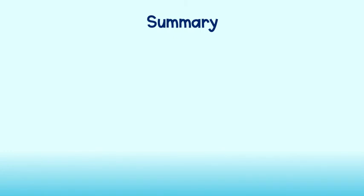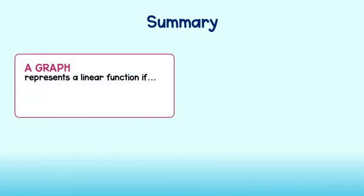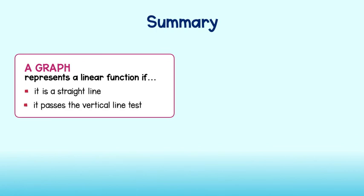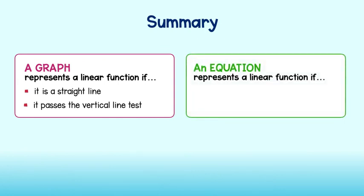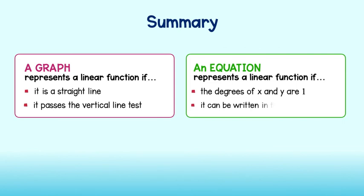In summary, we can confidently say that a graph represents a linear function if it is a straight line and it passes the vertical line test. We can also say that an equation is a linear function if the degrees of both x and y are 1 and it can be written in the form y equals mx plus b.